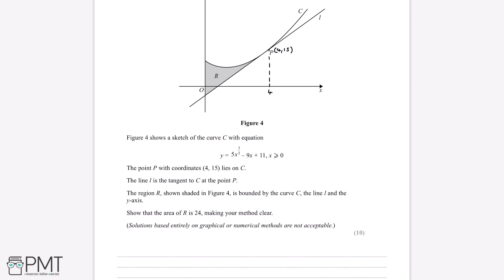To find the gradient of a curve, we differentiate the equation of the curve. So differentiating, dy/dx equals: for 5x to the power of 3/2, we multiply the coefficient 5 by the power 3/2 to get 15/2, then reduce the power by 1 to get x to the power of 1/2. For minus 9x, that is minus 9 times 1 giving minus 9, and x to the power of 0 is 1, so it is just minus 9. The constant 11 differentiates to 0, so dy/dx = (15/2)x^(1/2) minus 9.